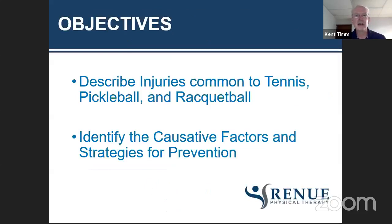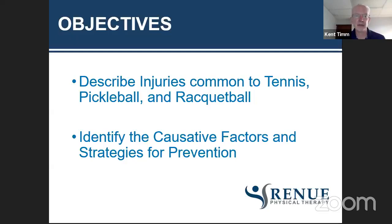The objectives for this presentation: I want to present and describe some of the common injuries that affect racket sports — tennis, pickleball, and racquetball. There are a lot of them. A lot of the injuries we'll talk about are things that could happen, not must or necessarily will happen. Related to that, we want to identify the causative factors for some of these injuries, and then suggest strategies for the prevention of these injuries.